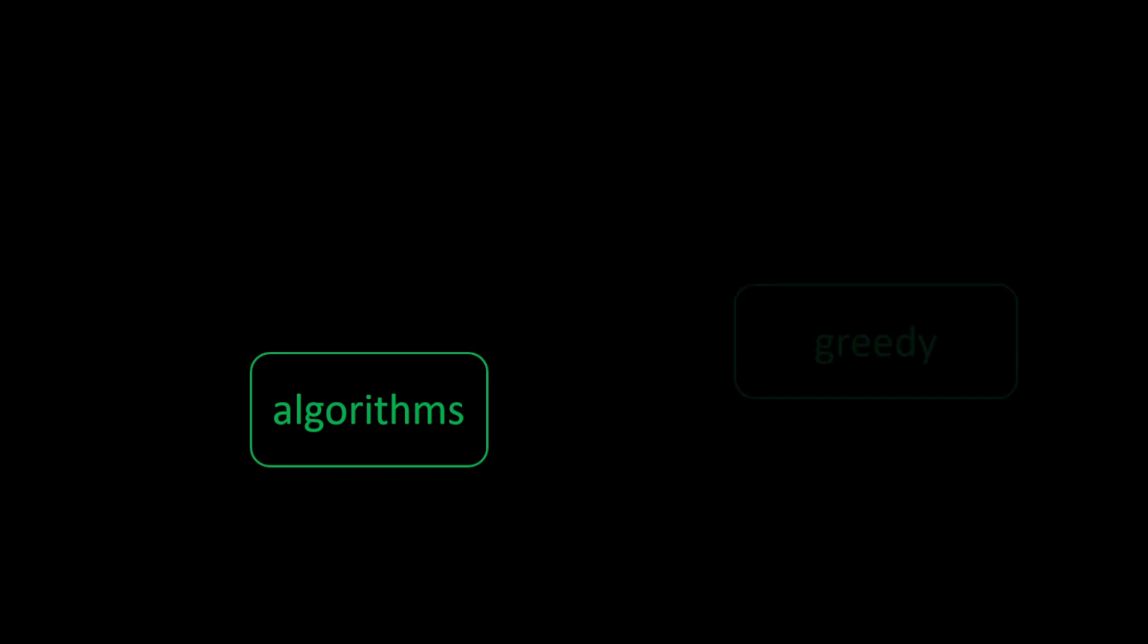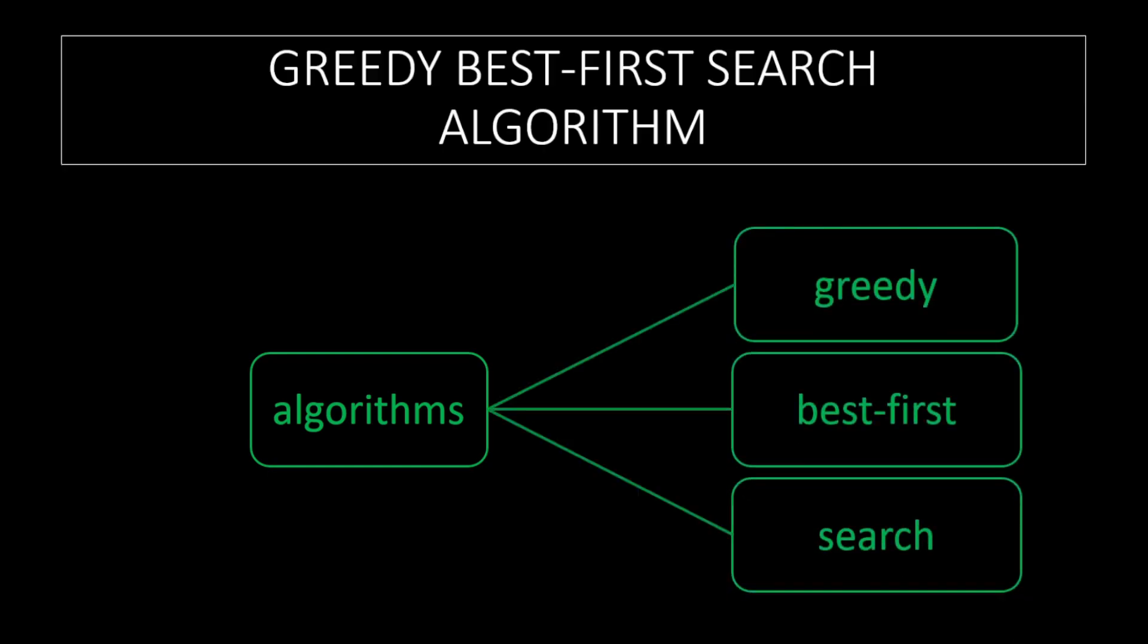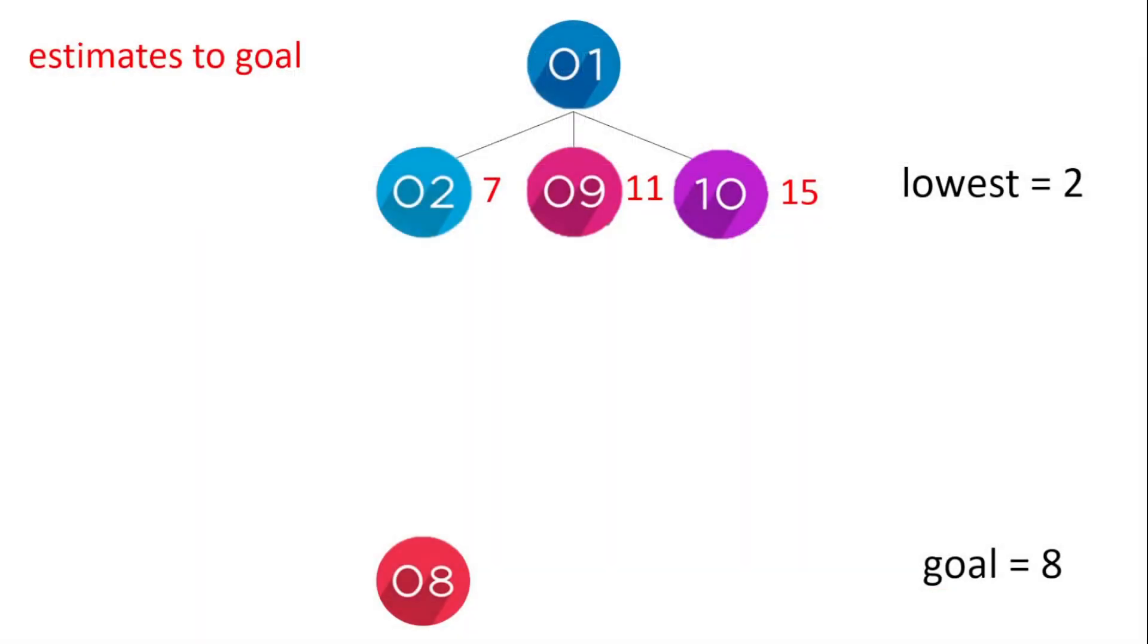Let's have a look at the greedy best-first search algorithm. First of all, a simple example: we want to go to node 8, that's the goal, and the estimated distance to that goal are 7, 11, and 15 from the three nodes 2, 9, and 10.